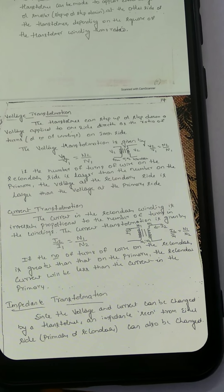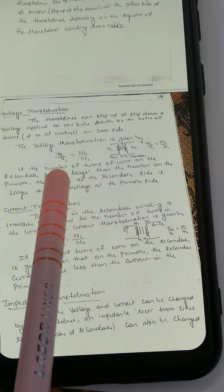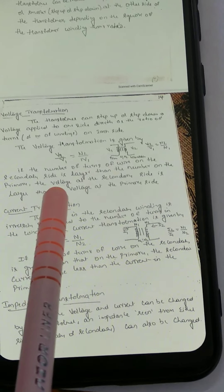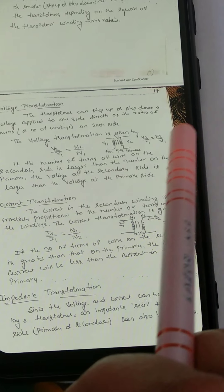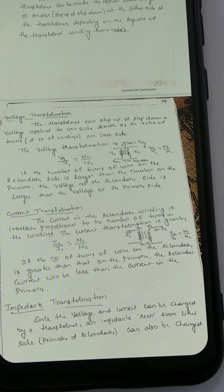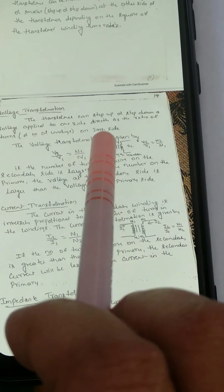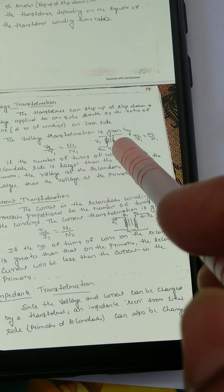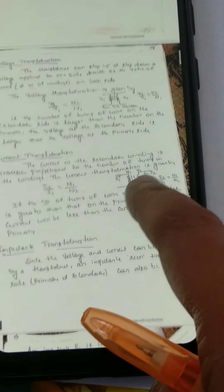If the number of turns on the secondary side is larger — that is, if N2 is larger than N1 — the voltage at the secondary side is larger than the voltage at the primary side. So if we make the secondary winding larger, the voltage across the secondary winding will be greater compared to the primary winding.